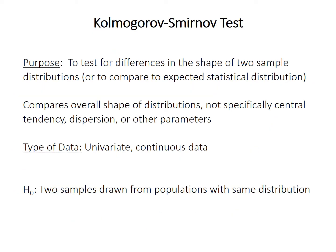Back to the KS test. Its purpose is generally to test for differences in the shape between two sample distributions. It can also be used to compare one sample to a known statistical distribution, but we'll focus on the two-sample test. The test compares the overall shape of the distribution — it doesn't specifically test for differences in central tendency or dispersion, although those are part of what affects the overall shape.